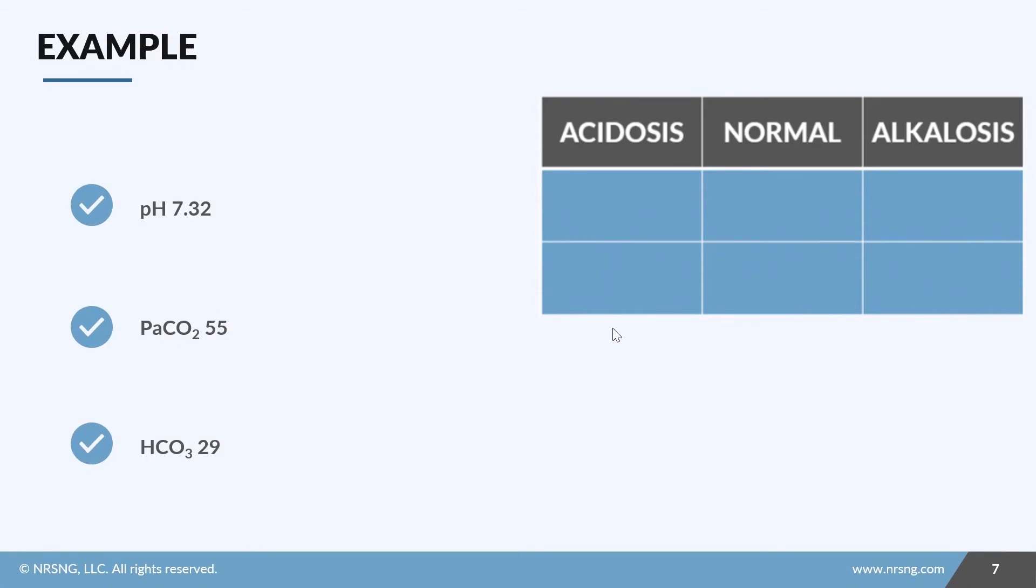Okay, let's do another one. Step one, pH of 7.3 is acidotic. CO2 of 55, high CO2 equals acid. So that is also acidotic. Bicarb of 29. Well, that's high. So that is alkalotic. Okay. So right away, step two, you can see we have a respiratory issue and we know it's an acidosis. So that's respiratory acidosis.